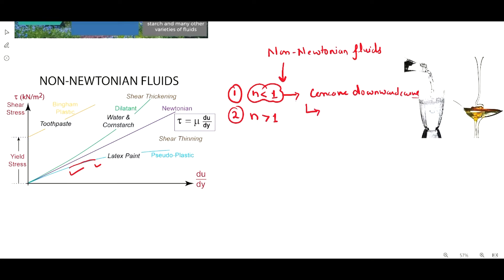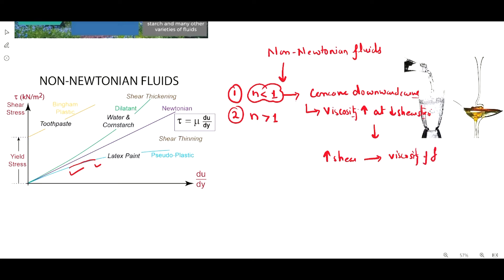The property of these fluids is that viscosity is high at low shear stress. As you increase the shear stress, the viscosity of the fluid decreases. These types of fluids are called pseudo-plastic fluids.